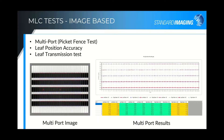For MLC image-based tests, we have the multi-port picket fence test, leaf position accuracy, and leaf transmission. You can use a specific phantom or simply use your graticule tray — giving you phantom-less tests for this group. Results show the leaf edge positions for different banks at different positions — left 70mm, 40mm, and so on across the right and left banks.